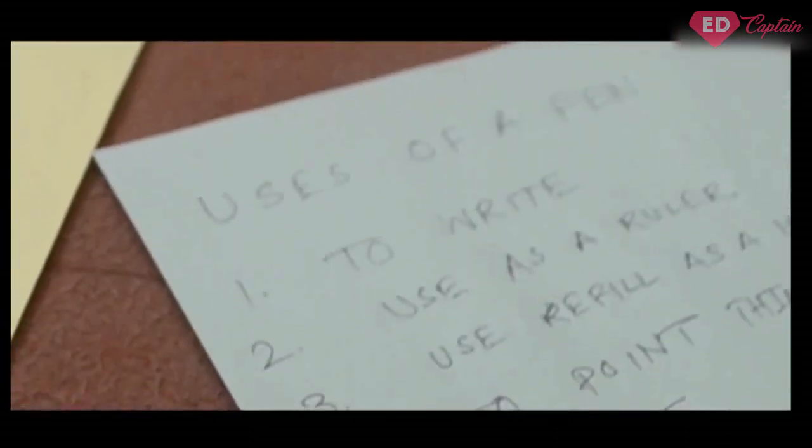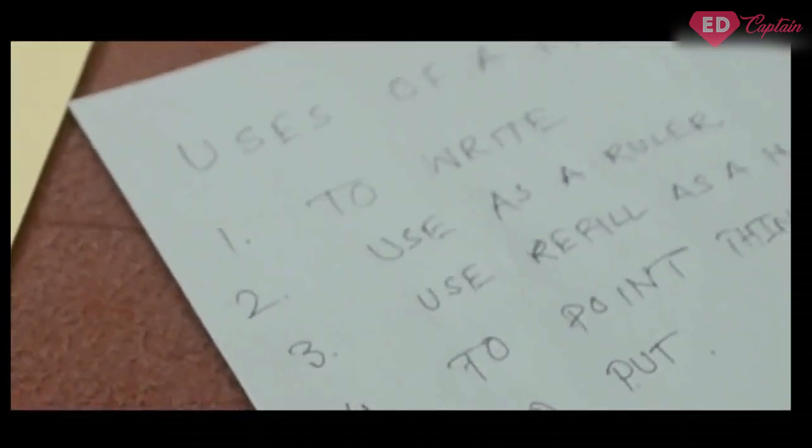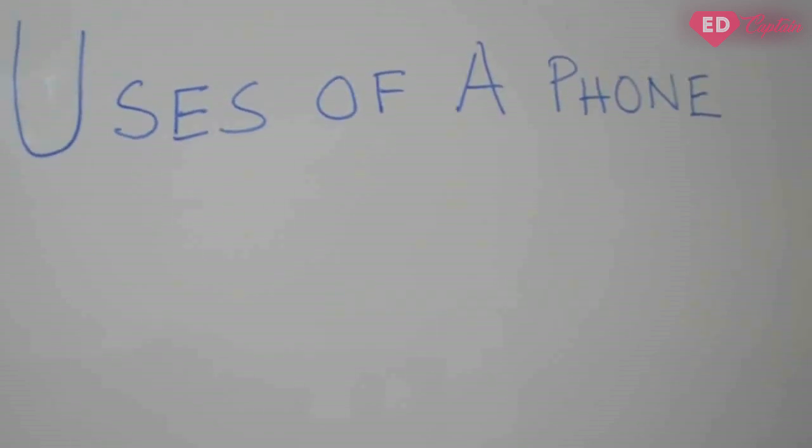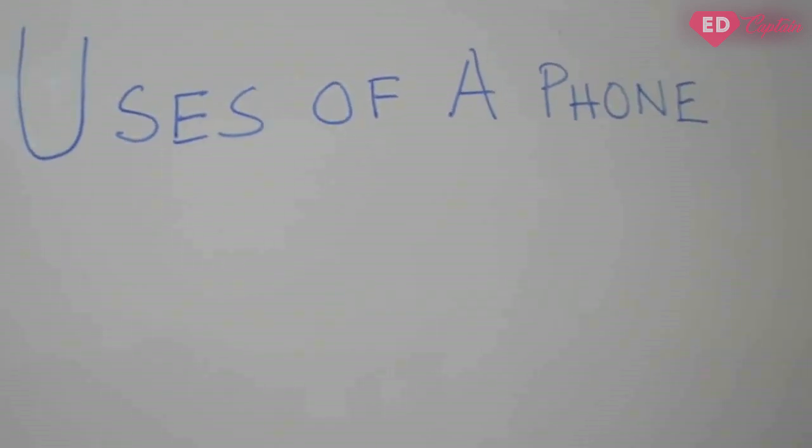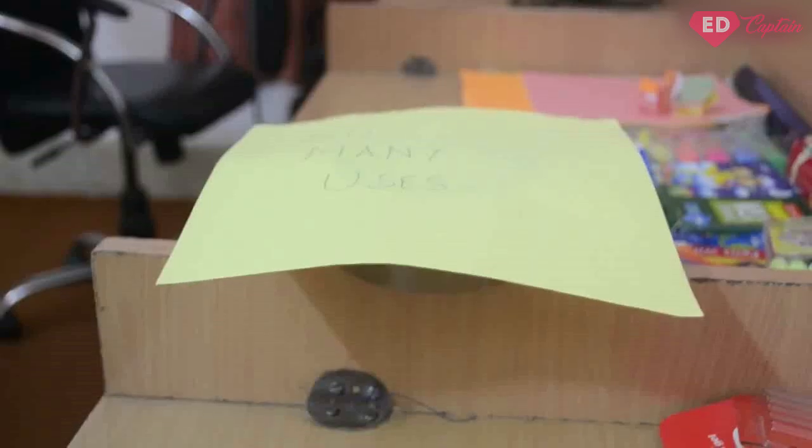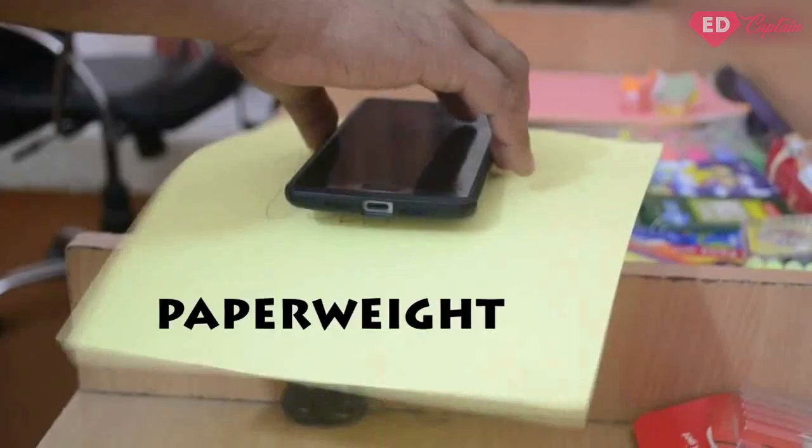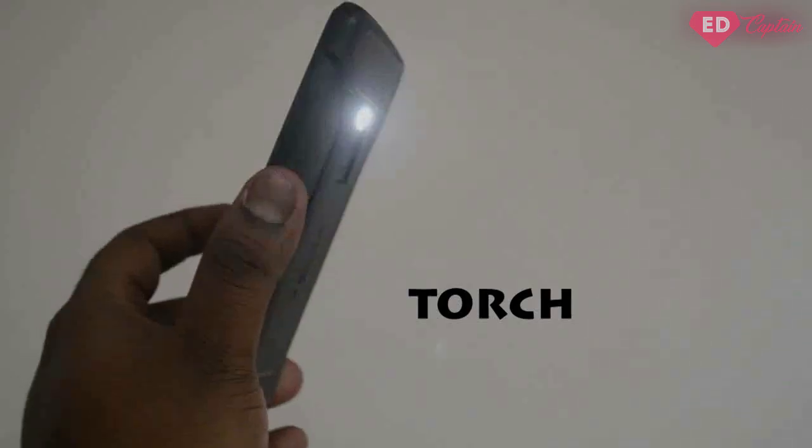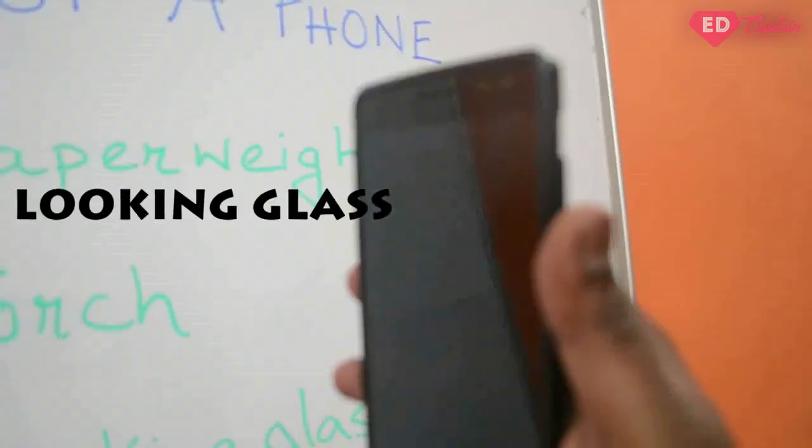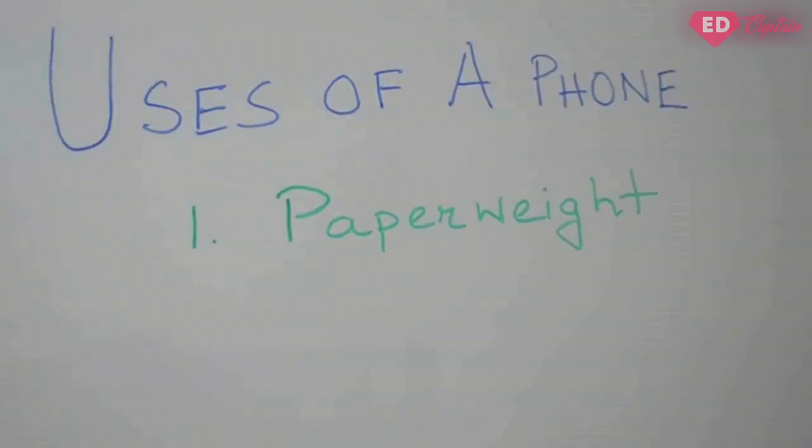The task of the players is to write as many uses of the objects assigned to them within 2 minutes. Let's assume that a player has been assigned a phone as the object. Now we need to imagine the multiple uses of a phone. A phone can be used just like a paperweight, a torch, and also as a looking glass.